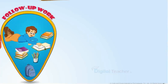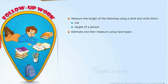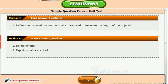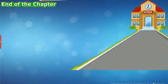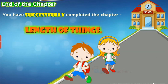Follow-up work: Measure the length of the following using a stick and write them — car, height of a person. Estimate and then measure using hand span — dining table, length of refrigerator. Test your understanding of the chapter by taking the mock unit test. You have successfully completed the chapter: Length of Things.